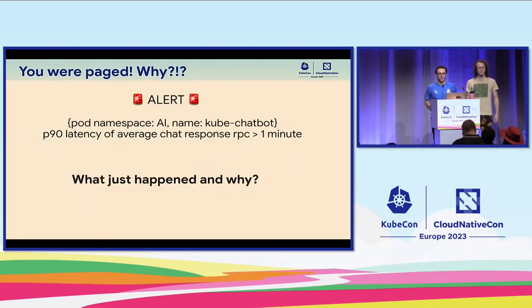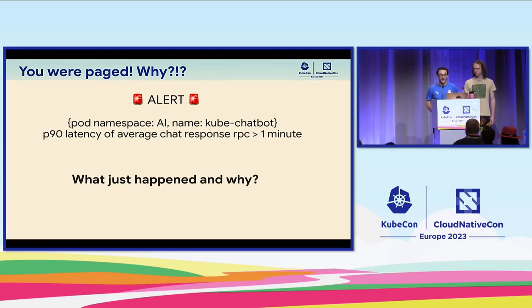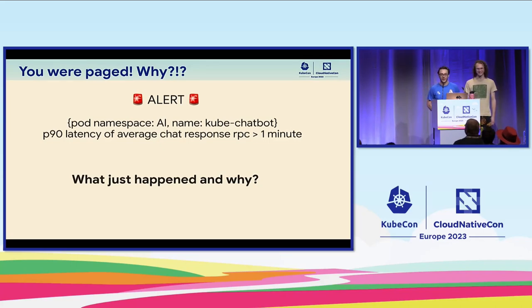Let me start this presentation with a situation you hopefully haven't been in during KubeCon, but for anyone who's been on call, it's probably familiar. You suddenly get paged, and maybe you have an alert — your chatbot application or LLM thing — saying that the latency of your application is too high. What just happened and what do you do? You acknowledge it, and then you figure out how to actually resolve it. That's what we hope to describe in this presentation.